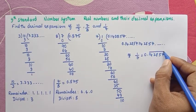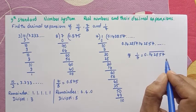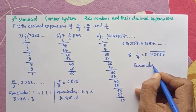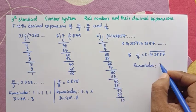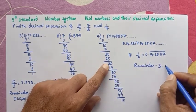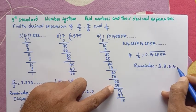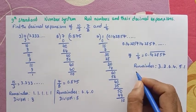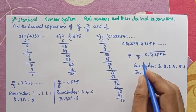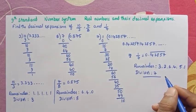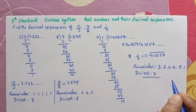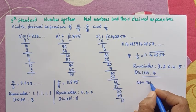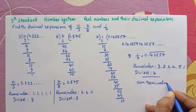The repeating part — period 1, 2, 3, 4, 5, 6 — is the period of this one. The remainders are 3, 2, 6, 4, 5, 1, and 1 is also a remainder here. The divisor is 7. This is also a non-terminating decimal expansion — non-terminating decimal expansion.